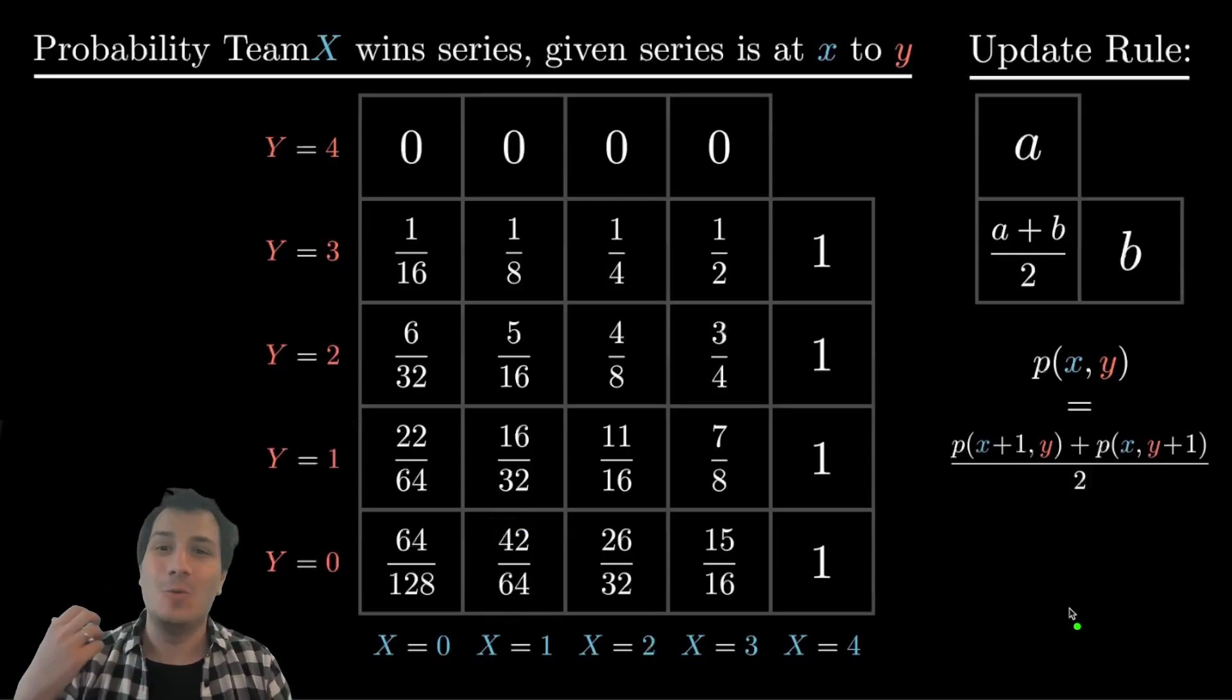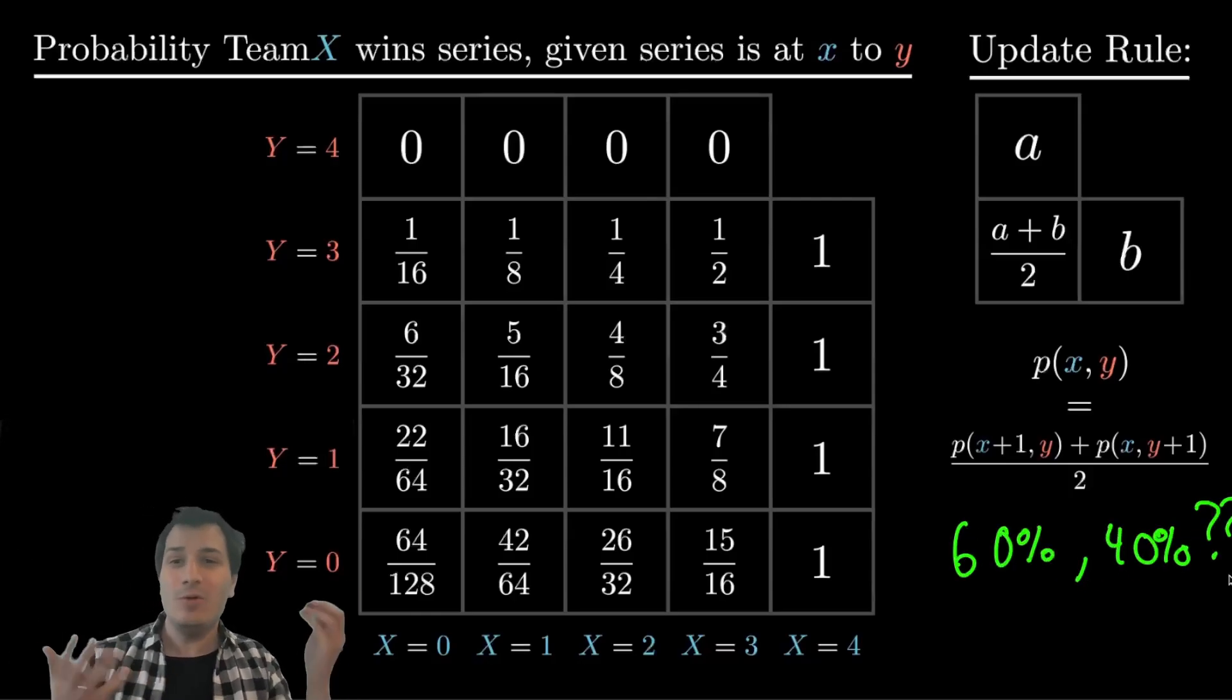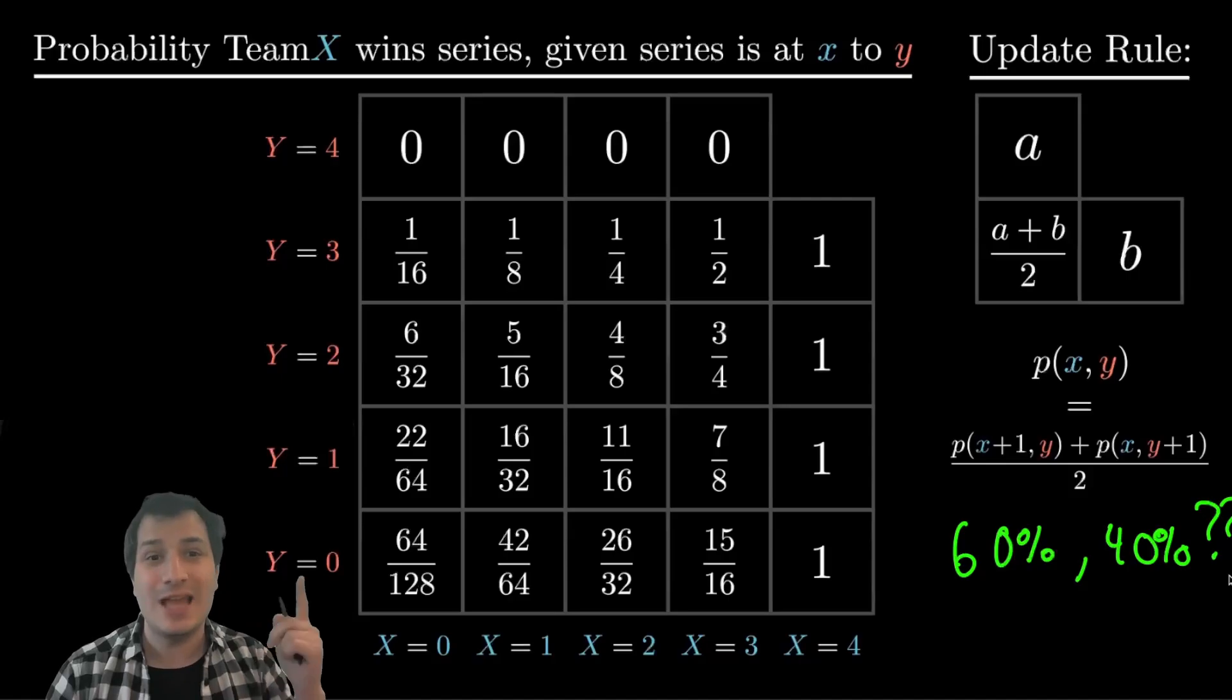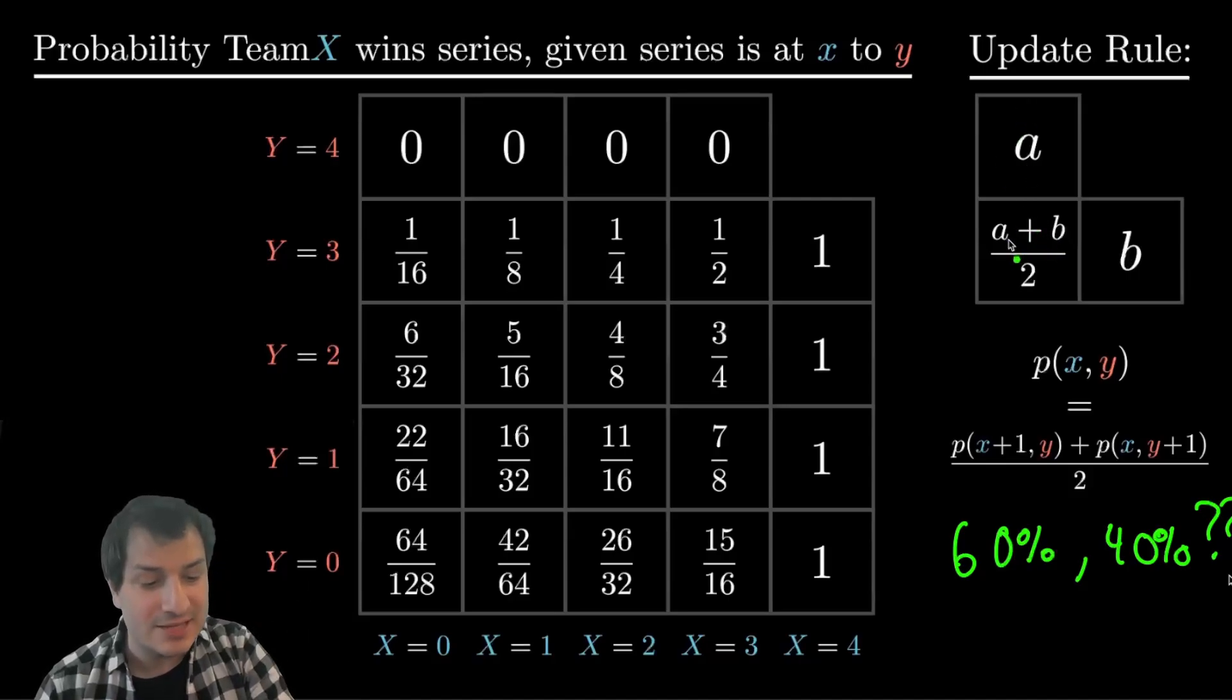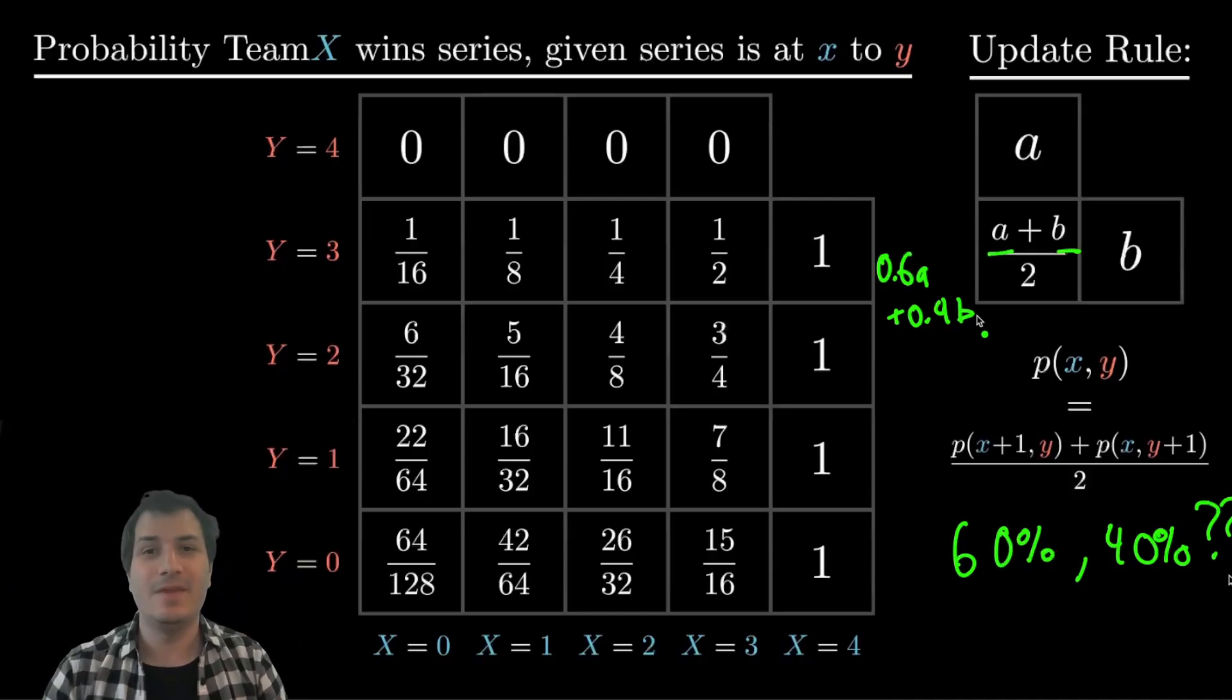I'll say a couple more comments. One is, what if instead of being 50-50 for each game, it was 60-40 for each game? What would we do then? And the only thing we'd have to do, we would have to slightly change the update rule. So the update rule right now says 50% of A and 50% of B. If you changed it to 0.6 times A plus 0.4 times B, so a weighted average of the two numbers to the up and the bottom, then you could again extract the probability to win with this grid by just using a weighted average instead of simple averages.